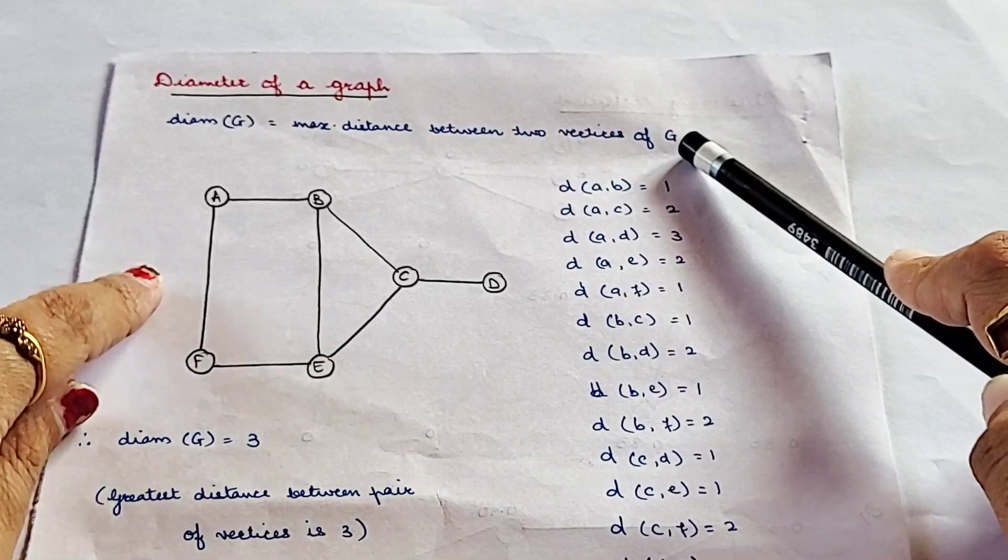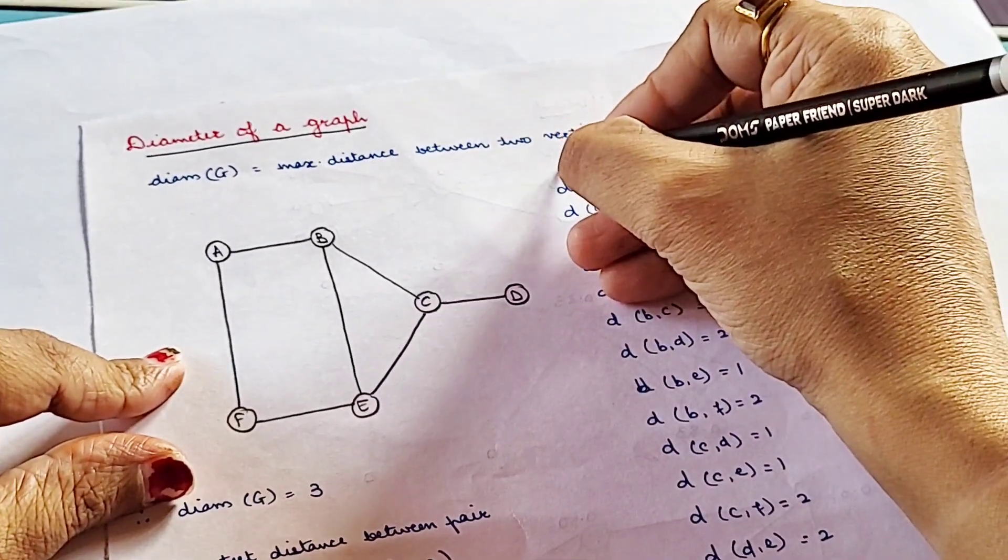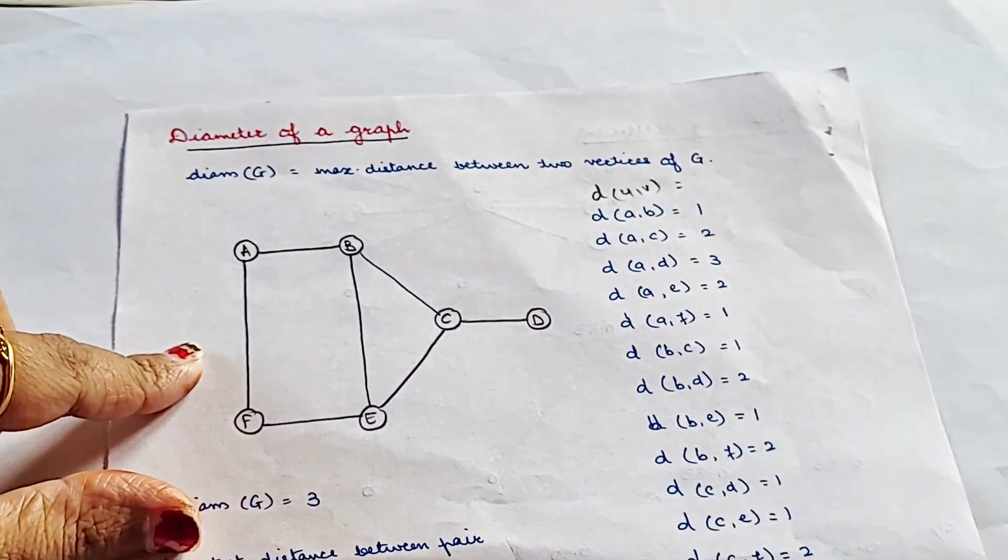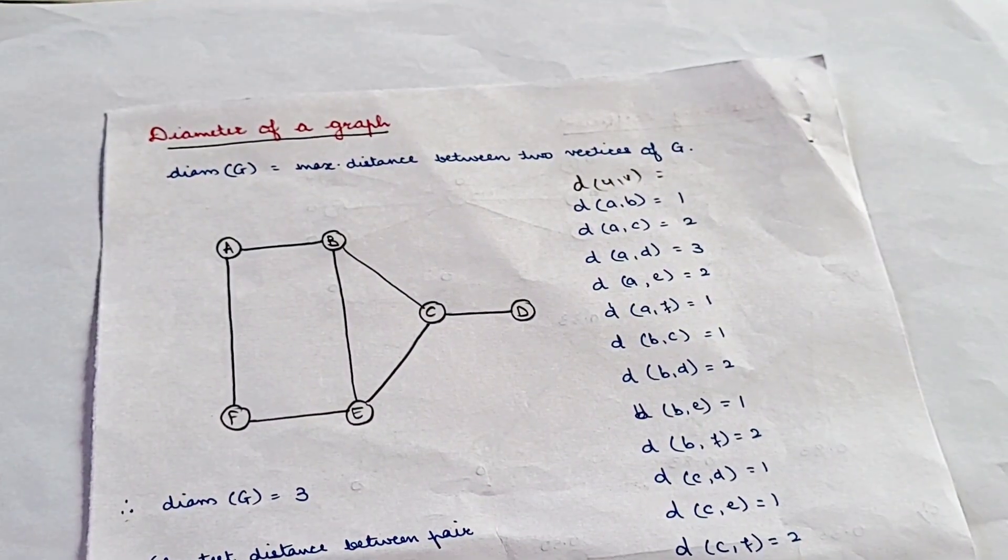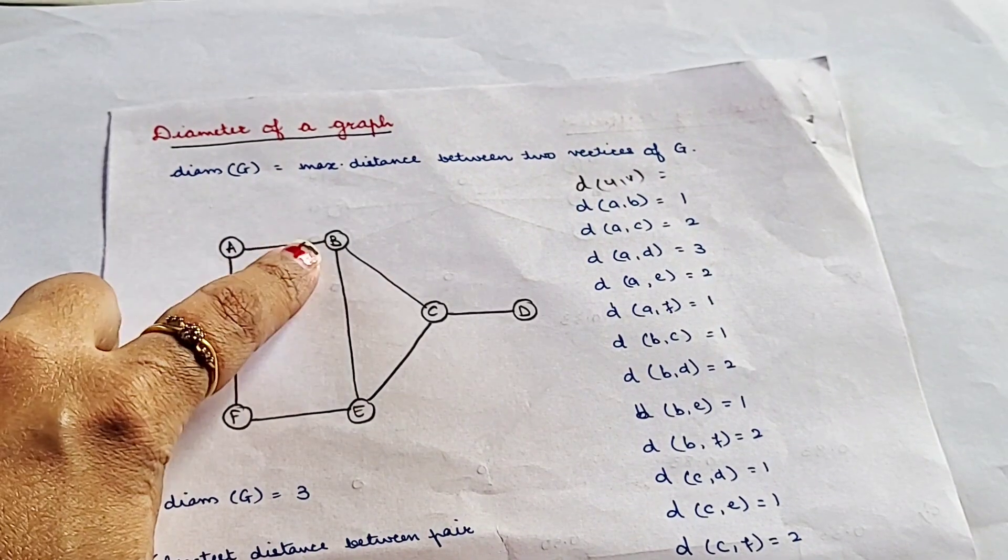G is your graph. So this is a given graph to you. We will be finding the vertices d(u,v) where u,v represents the shortest path distance between two vertices.